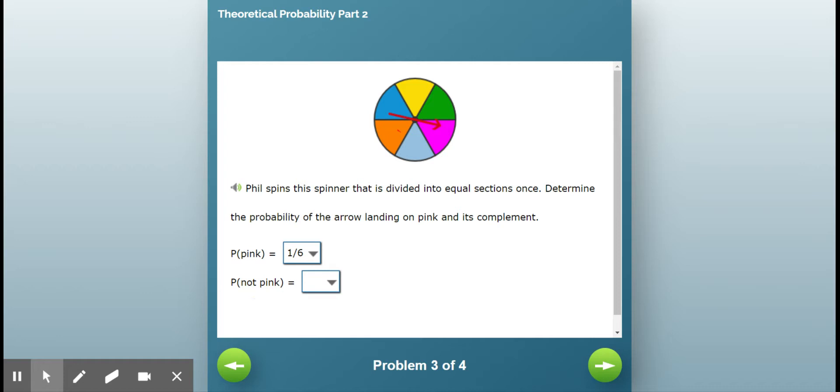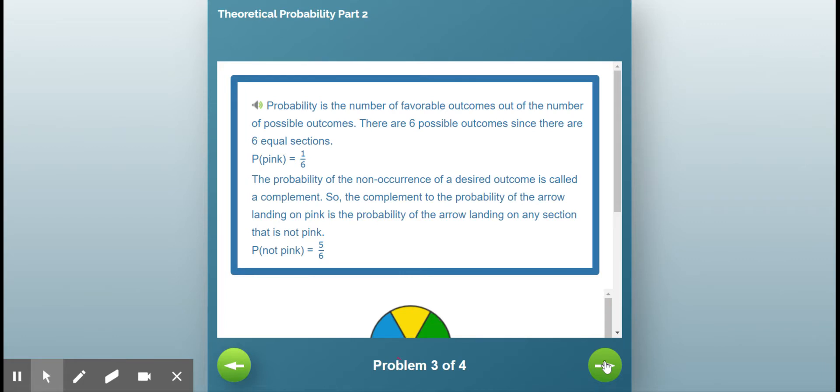The probability that it will not land on pink, well, there are six sections. How many of them are not pink? Well, there are five. So that is the complement to probability.